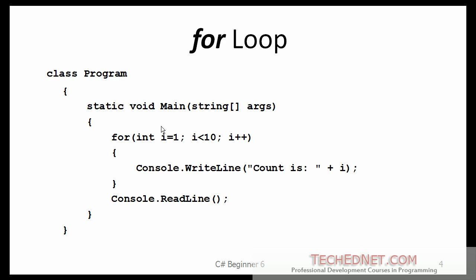It will go back to the top of the loop, but now go to the increment part, so i is going to be incremented by 1 — i becomes 2. It will check the condition again; the condition is still true, so it will go through the loop, print the next value of i, and continue on. This FOR loop keeps going as long as that condition is true.